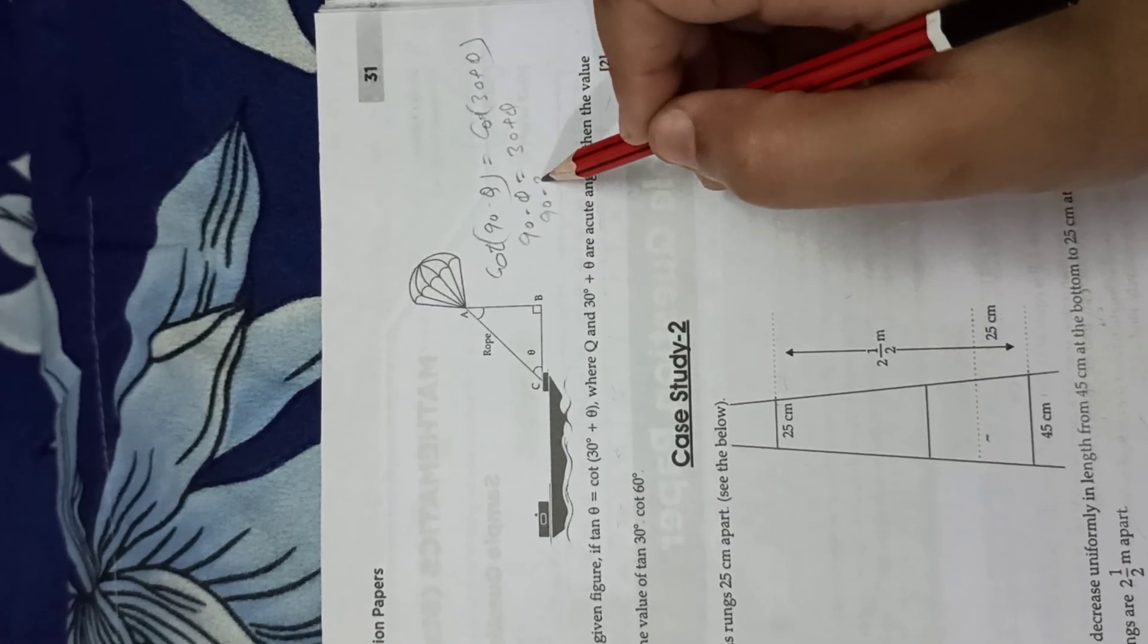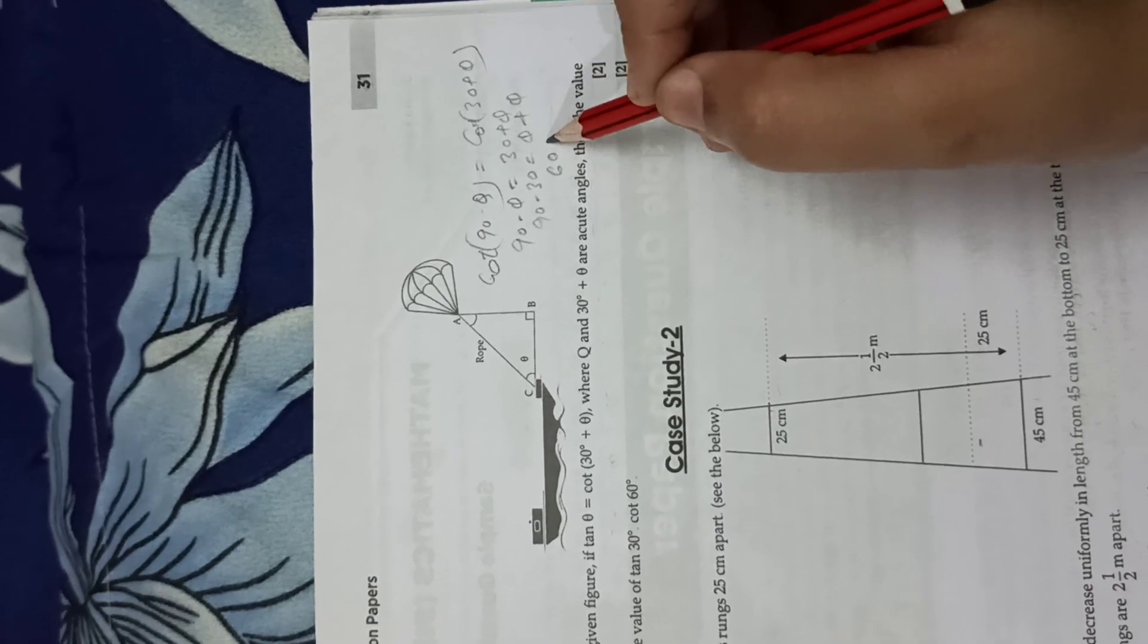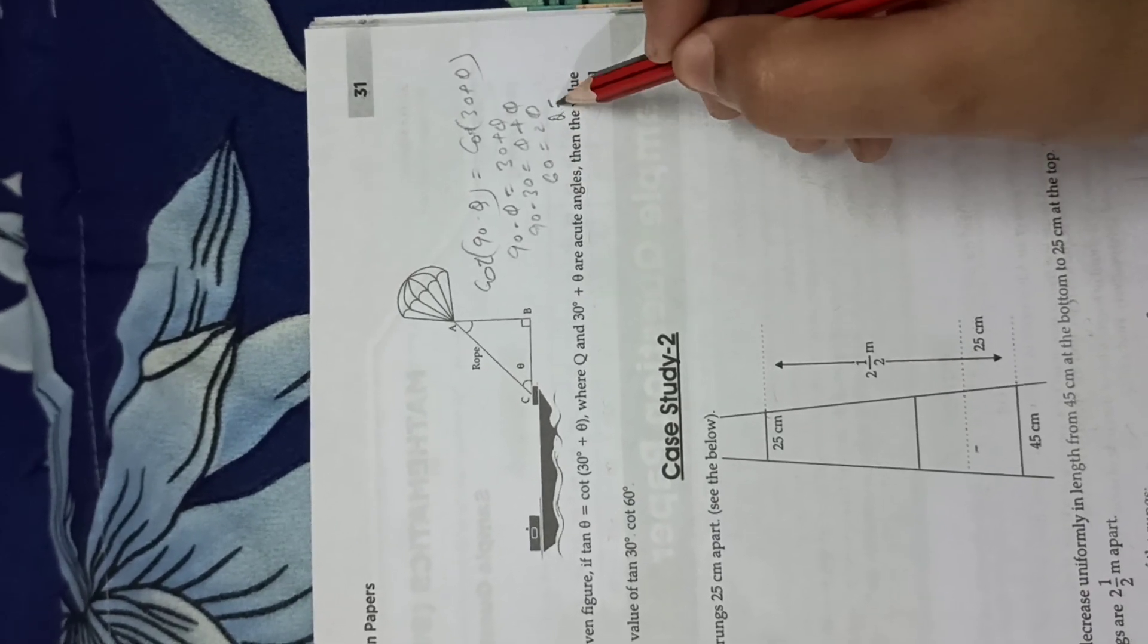Theta plus theta is equal to 90 minus 30, so 60 equals 2 theta. Therefore theta equals 30.